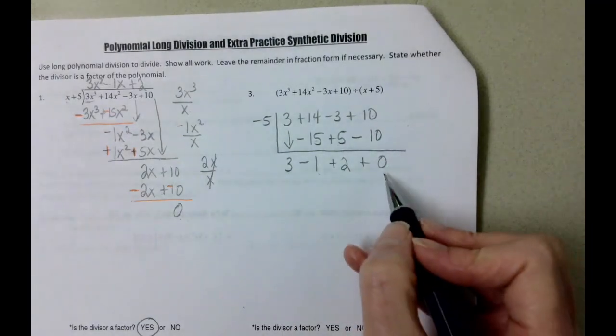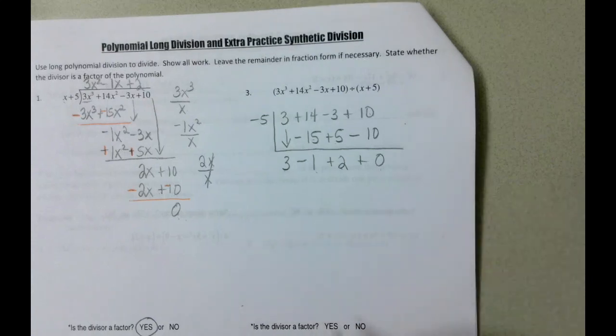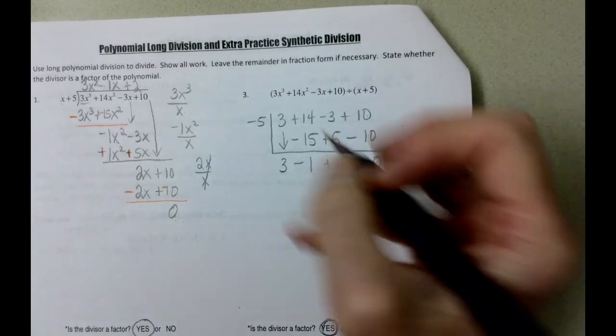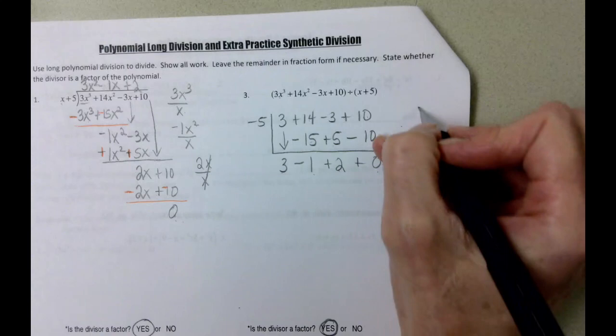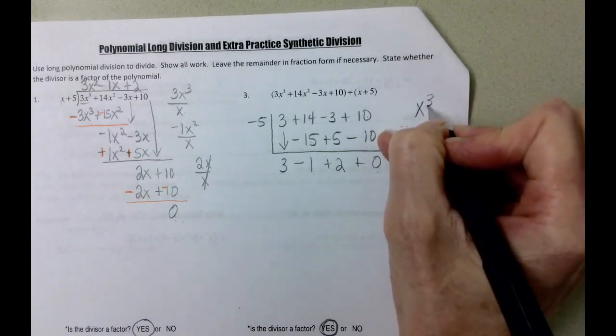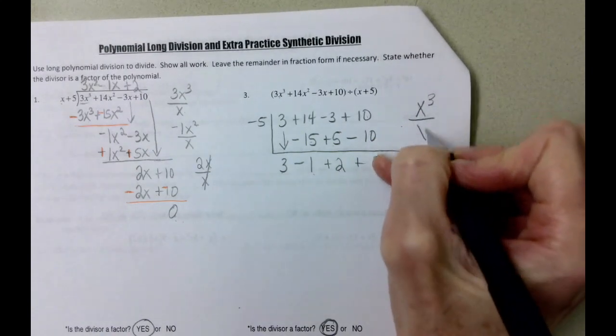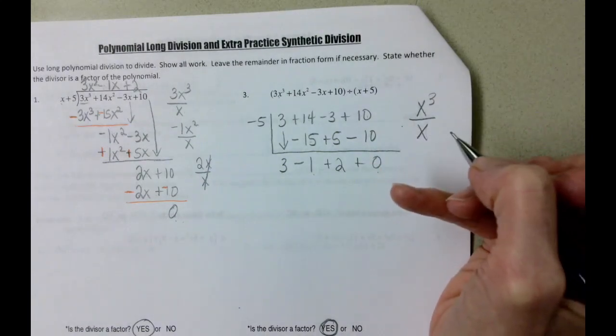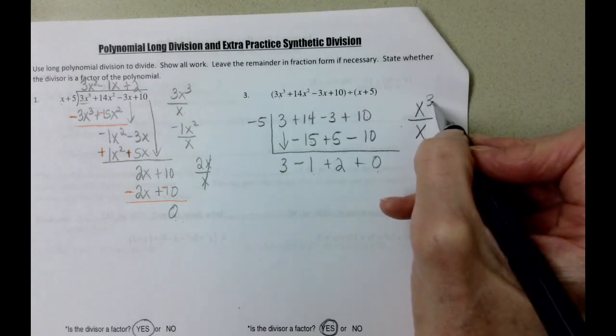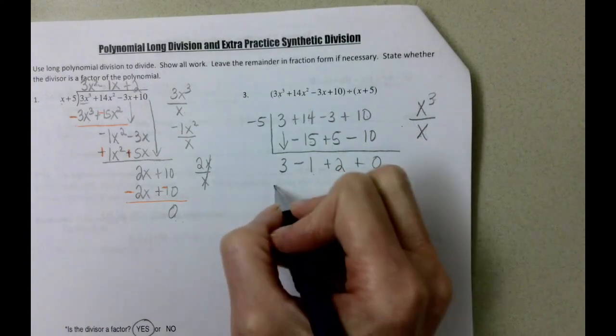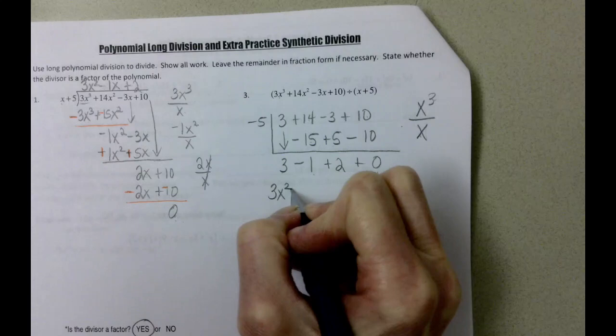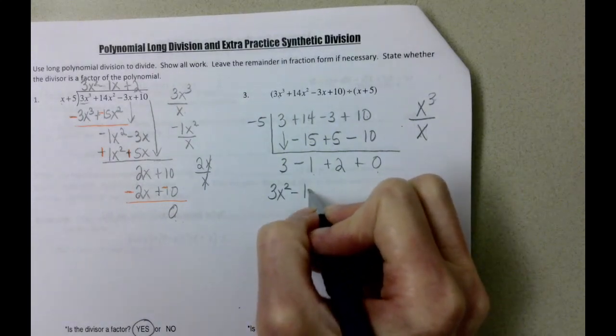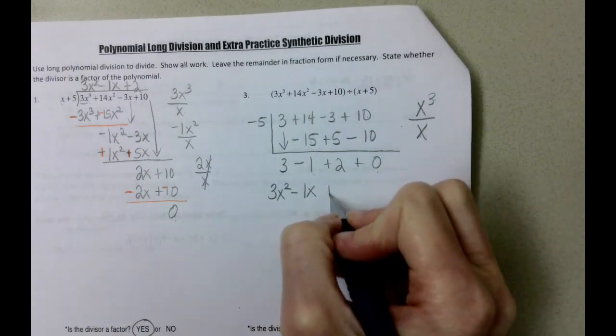Again, because we end with 0, x plus 5, the divisor, is a factor. And our last part here is to put the variables back in. Once again, we started with an x cubed, that was our highest degree term. We're dividing by x. Very contrived, it's very planned out to be able to do this. We had 3x's, we took out 1. That means we're going to start with x squared, and then we're going to descend. Minus 1x plus 2.